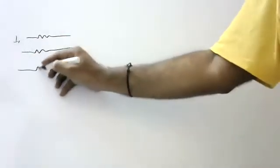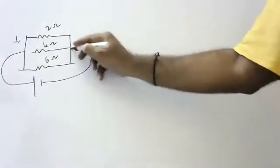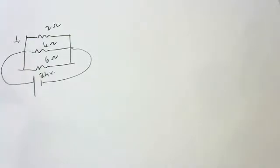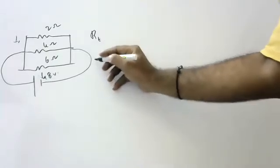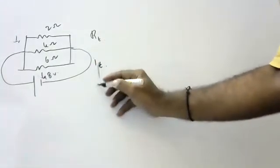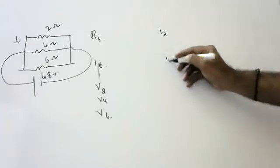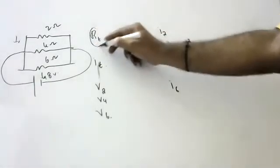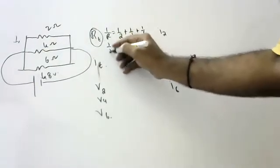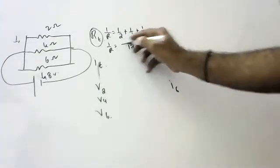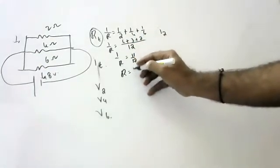Next numerical: resistors of 2 ohms, 4 ohms, and 6 ohms are connected to a battery of 48 volts. To find total resistance: 1/R = 1/2 + 1/4 + 1/6. LCM is 12. So 1/R = 6/12 + 3/12 + 2/12 = 11/12. Therefore R_total = 12/11 ohms.